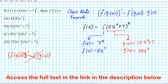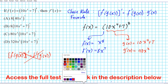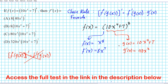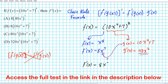We've differentiated the outer and inner functions. Now, following the chain rule procedure, we evaluate the derivative of the outer function at the inner function. That means we take the inner function and input it in place of x. So f prime of x becomes 8 times the quantity in the 7th power, where we replace x with the inner function — the original inner function, not the differentiated one — giving us 8 times the quantity 10x to the 4th plus 7, to the 7th power.